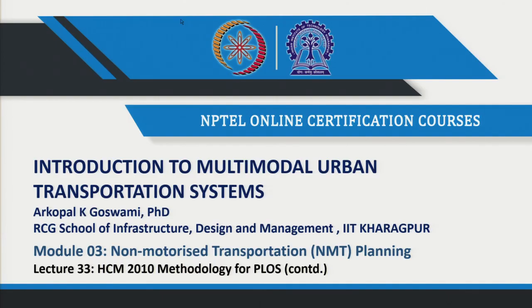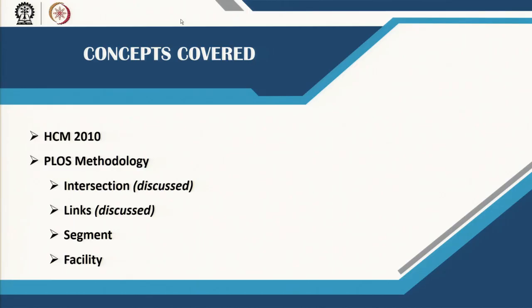Welcome back. In this lecture we will continue our previous discussion of developing pedestrian level of service scores and pedestrian level of service grades for an urban pedestrian facility. We have already looked at calculating pedestrian level of service scores for intersections and links. In this lecture we will start looking at how to calculate it for the segment and how to calculate it for a facility.